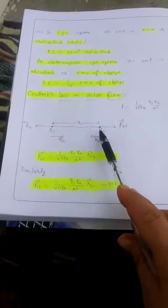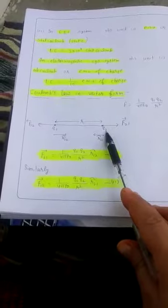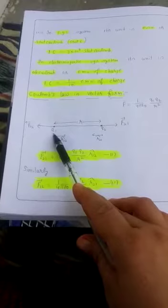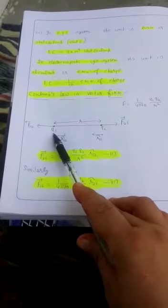These are your point charges separated by distance r in vacuum. q1 and q2 both are positive. It will experience some force due to charge q2.